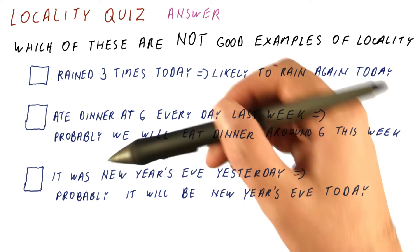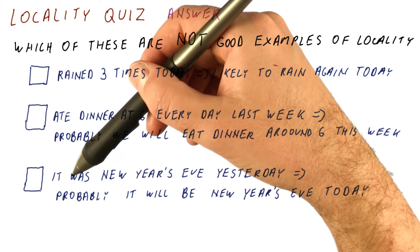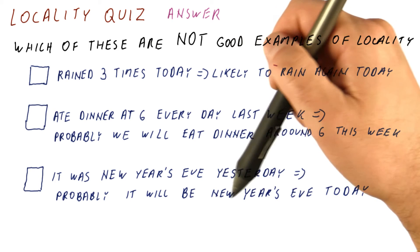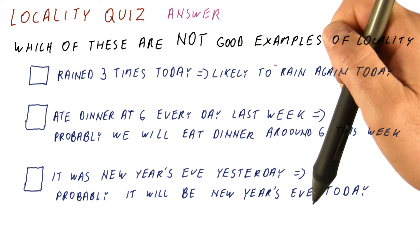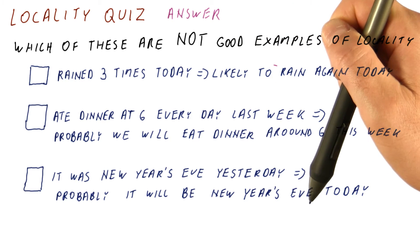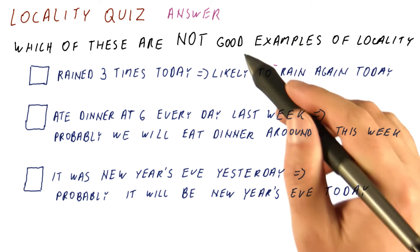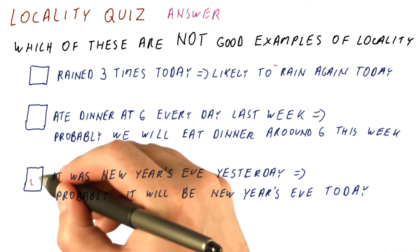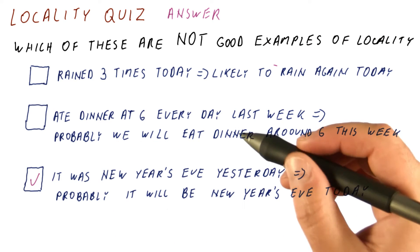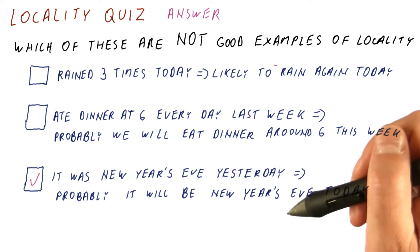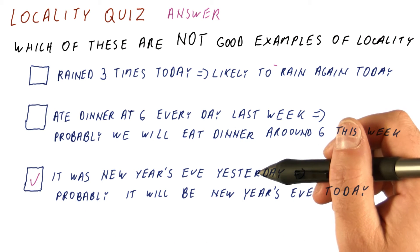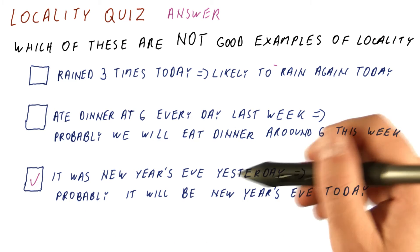And finally, it was New Year's Eve yesterday, so it will probably be New Year's Eve today too. This one is not a good example of locality. Why? Well, because some things do not have locality.